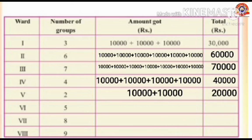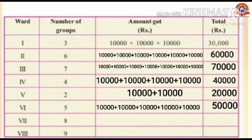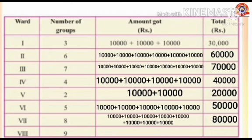Ward 6 has 5 groups, so the amount ward 6 got is 5 × 10,000 = 50,000. Ward 7 has 8 groups, so the amount ward 7 got is 8 × 10,000 = 80,000. Ward 8 has 9 groups, so the amount ward 8 got is 9 × 10,000 = 90,000.